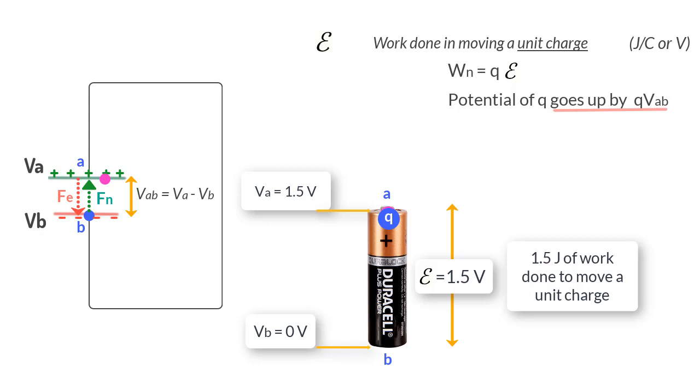Since the potential difference between point A and B is VA minus VB or let us call it VAB, the potential of the charge Q goes up by Q times VAB. And since we just showed earlier that there is no change in kinetic energy of the charge, the work done on the charge by the non-electrostatic force must equal the change in potential, or Q times the electromotive force is equal to Q times VAB, or the electromotive force is equal to VAB.